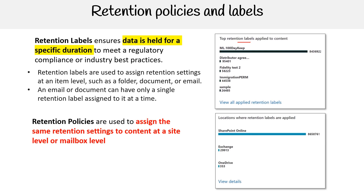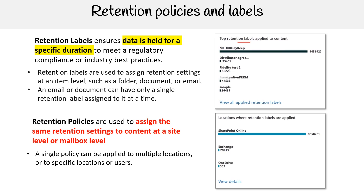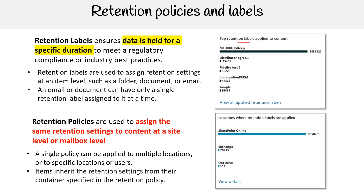Retention policies are used to assign the same retention settings to content at a site level or mailbox level. A single policy can be applied to multiple locations or to specific locations or users. Items inherit the retention settings from their containers specified in the retention policy. Here you can see the locations where the retention labels are applied — this is similar to how the sensitivity labels work.